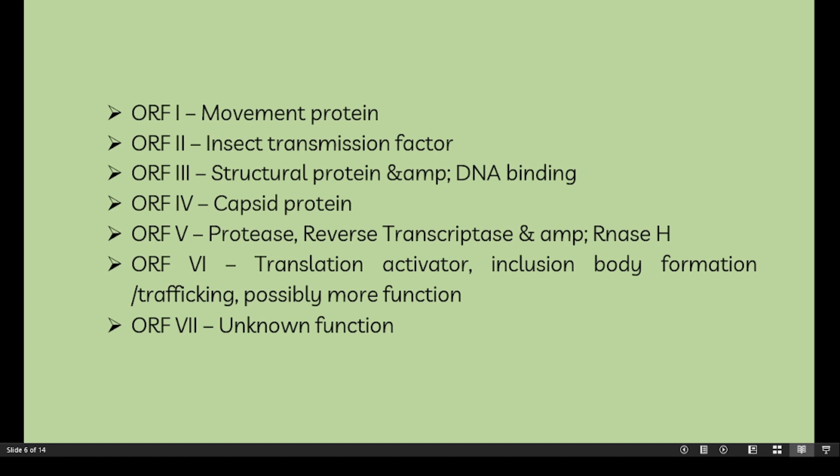In addition to its functions regarding translational activation and formation of inclusion bodies, P6 has been shown to interact with a number of other CaMV proteins such as P2 and P3, suggesting it may also contribute to viral assembly and aphid-mediated transmission. P6 has also been shown to bind to P7; investigating interactions between the two may help elucidate the as-yet unknown function of P7. Another function of P6 involves modification of NPR1 during the course of infection.